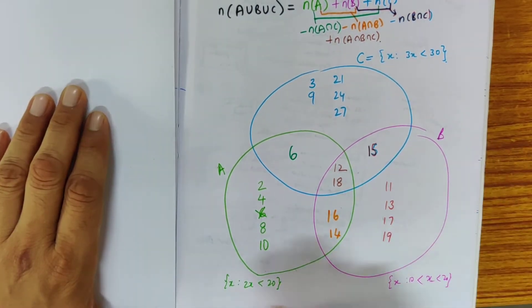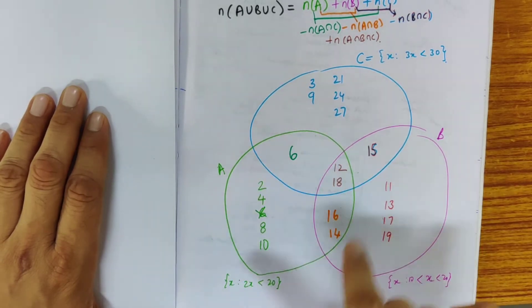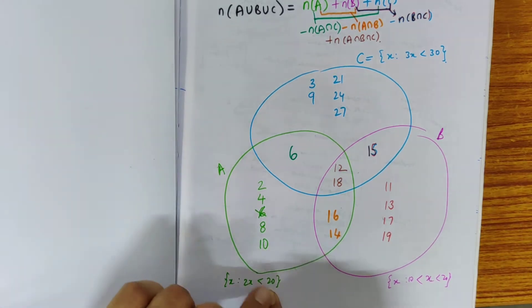And so the example I have given here is x such that 2x is less than 20 which means all even numbers that are less than 20, same as the previous example.